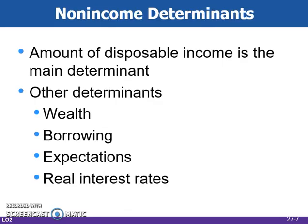Non-income determinants of consumption and saving can cause people to spend or save more or less at various income levels, although the level of income is the basic determinant. An increase in wealth shifts the consumption schedule up and the savings schedule down. In recent years, major fluctuations in stock market values have increased the importance of this wealth effect. A reverse wealth effect occurred in 2000 and 2001 when stock prices fell dramatically. Household debt can also cause shifts in the consumption schedule. Lower debt levels can push the consumption schedule up and the savings schedule down. Changes in expected future prices or expected wealth can affect consumption spending today. And the last determinant is real interest rates. Declining interest rates increase the incentive to borrow and consume and reduce the incentive to save.